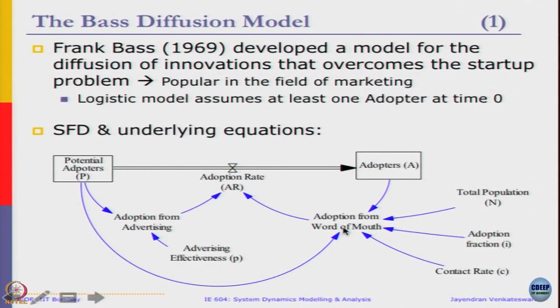This model is very similar to the diffusion model that you saw where the adoption rate was equal to adoption from word of mouth. The underlying equation continues to remain the same. When p is equal to zero, we will have a basic logistic diffusion model. But if p is greater than zero then we call it as a Bass diffusion model where adoption rate is nothing but a sum of adoptions from advertising and adoptions from word of mouth.